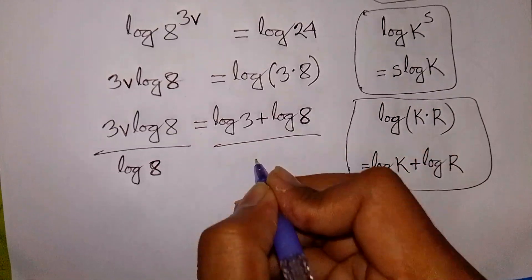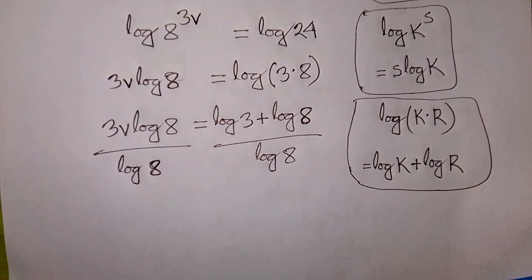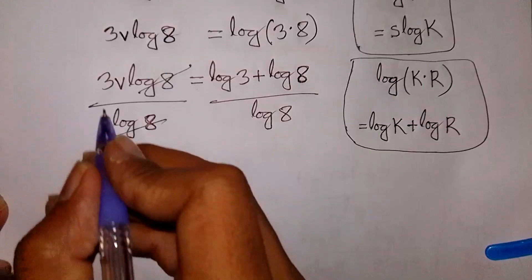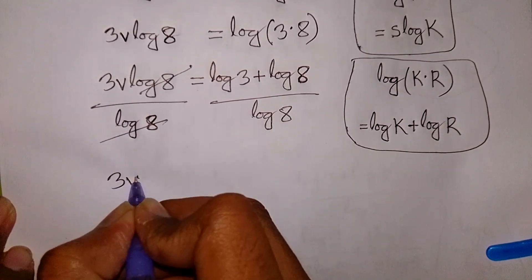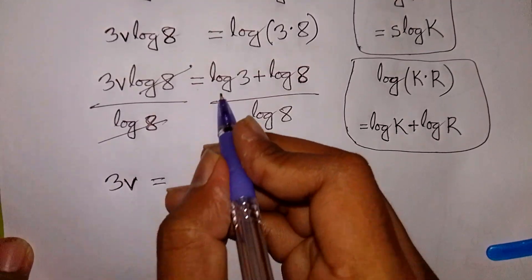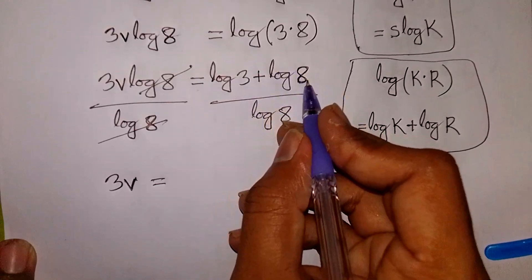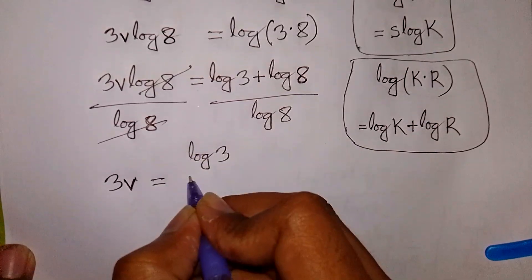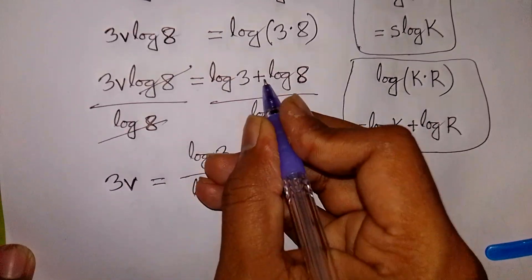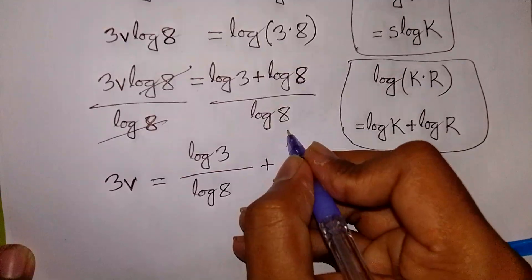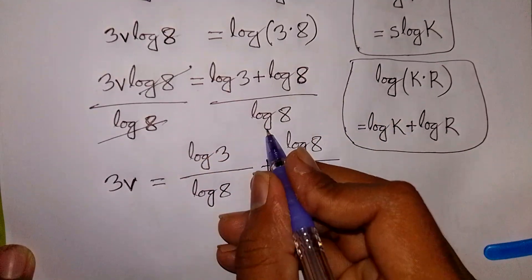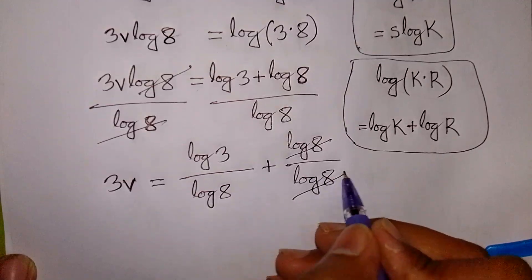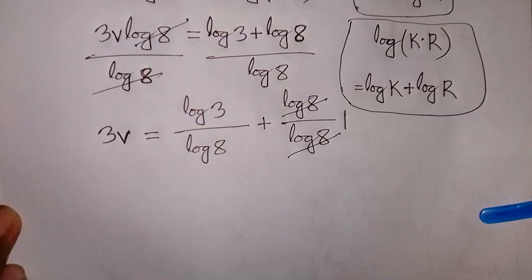Now we divide both sides by log 8. This log 8 on the left cancels, and the right side becomes log 3 over log 8 plus log 8 over log 8. Since log 8 over log 8 cancels to 1, we have 3V is equal to log 3 over log 8 plus 1.